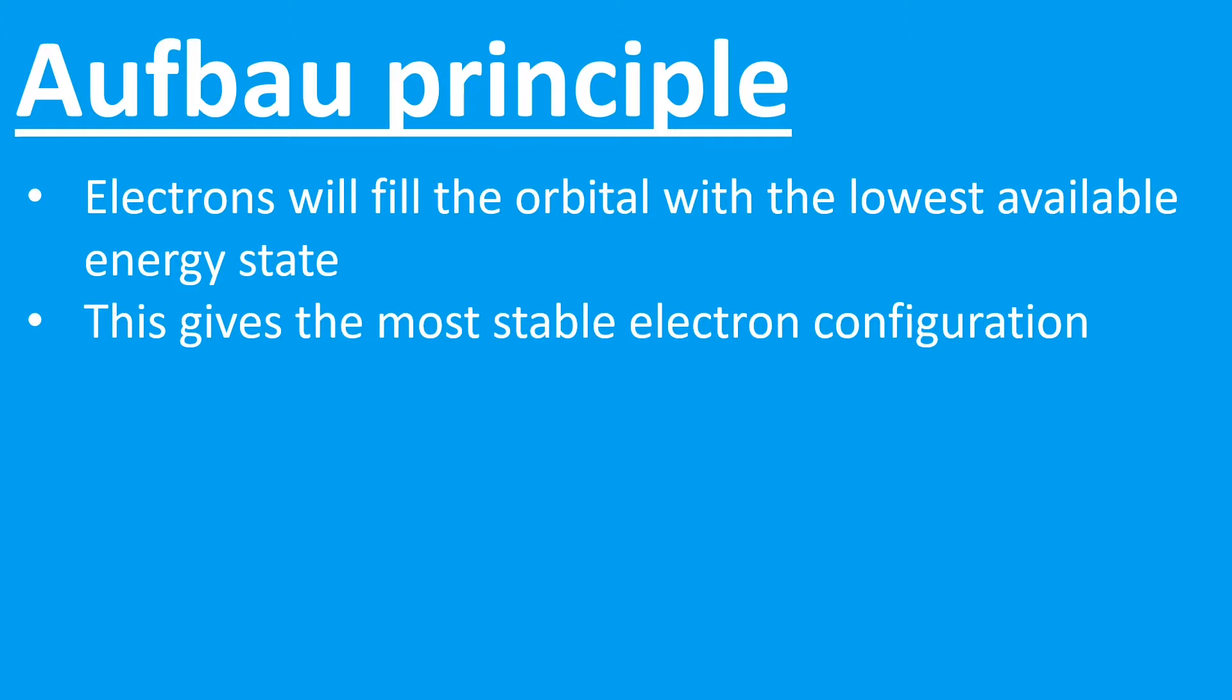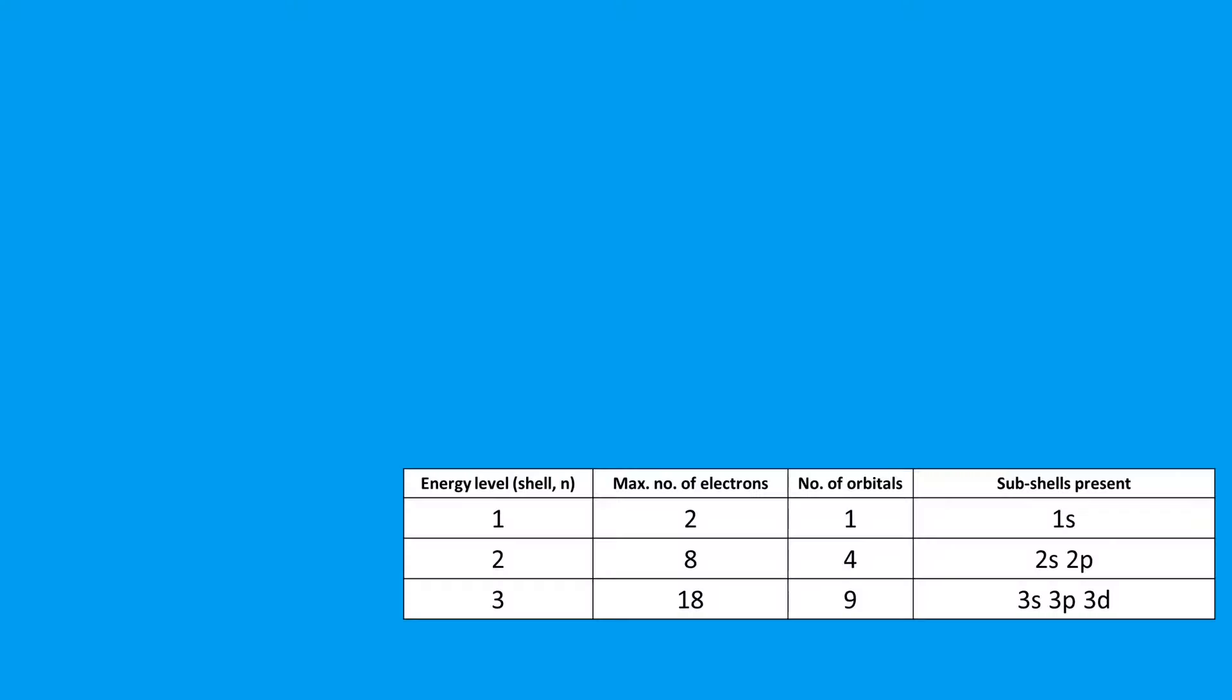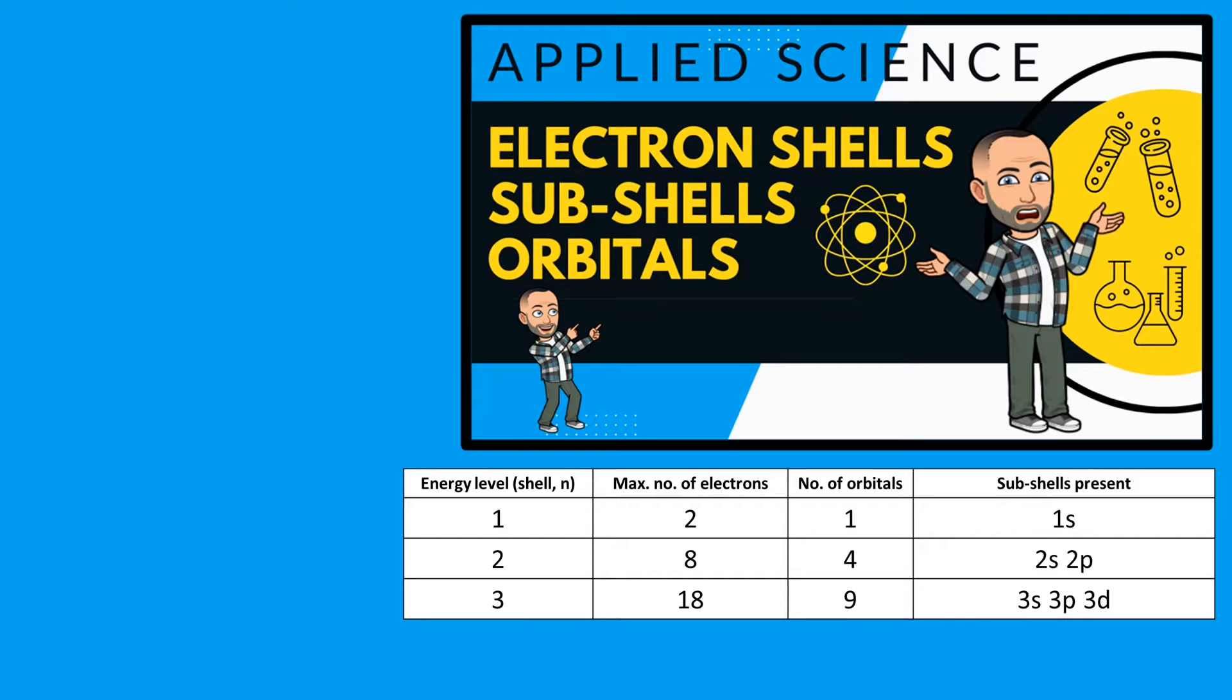From the previous video, we're aware of the first shell just containing a 1s subshell. We also know that the second shell is a 2s and a 2p subshell which can hold eight electrons or four orbitals. The third shell is a 3s, a 3p, and a 3d, and we learned that in the previous video. So if you haven't done that, as I've said earlier, go back and watch that first.